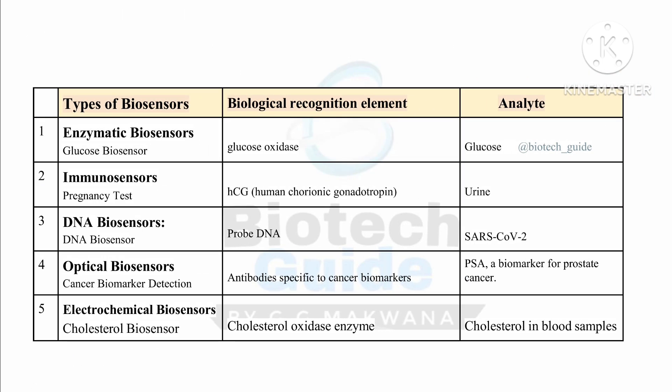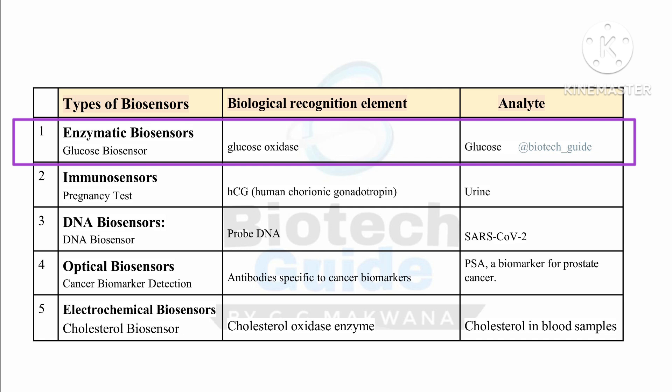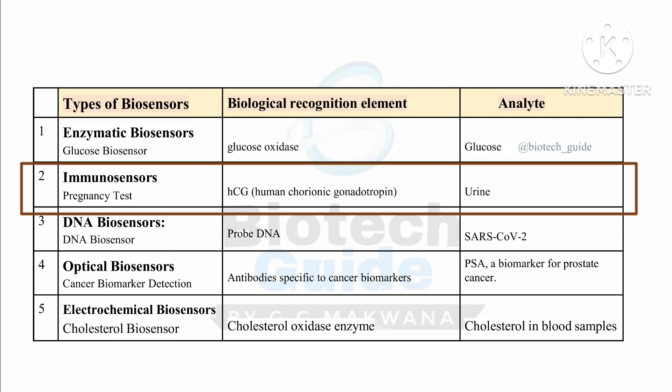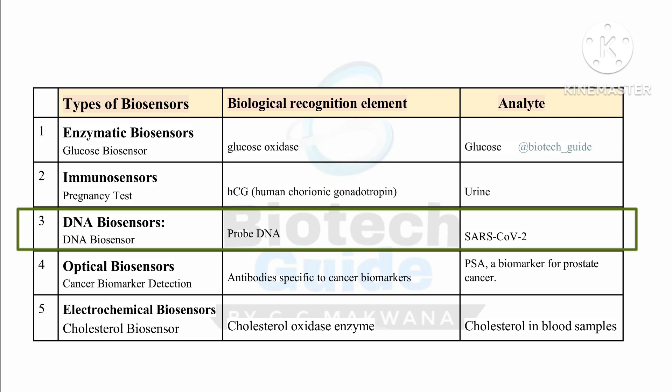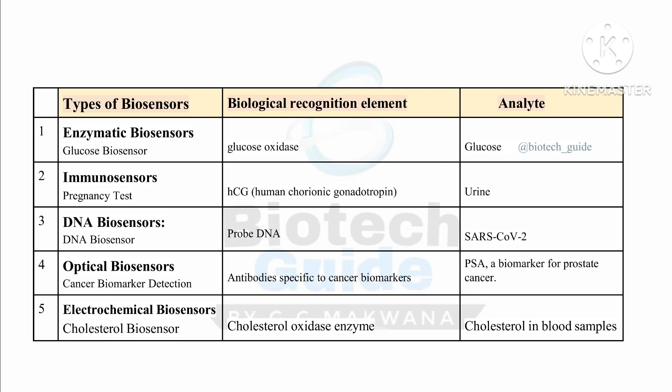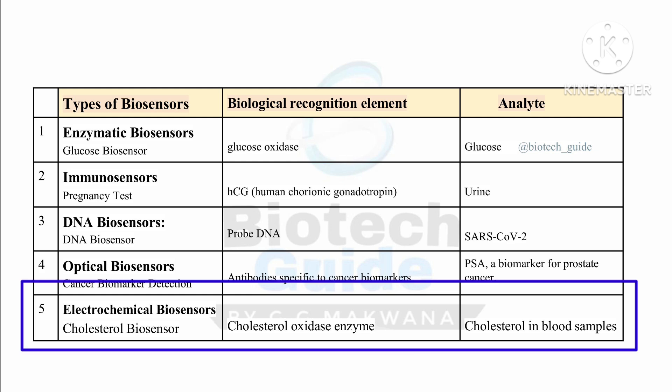Let us take a brief overview of all five biosensors, their biological recognition element, and the analyte. First, enzymatic biosensor: glucose oxidase is the recognition element, and glucose is the analyte. In immunosensor: human chorionic gonadotropin is the recognition element, and urine is the analyte. In DNA biosensor: probe DNA is the recognition element, and SARS-CoV-2 is the analyte. In optical biosensor: antibodies specific to a cancer biomarker are the recognition element, and PSA — a biomarker for prostate cancer — is the analyte. Then, cholesterol oxidase enzyme is the recognition element, and cholesterol in the blood sample is the analyte.